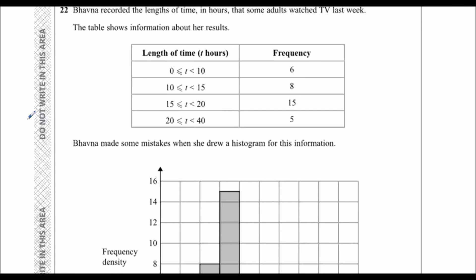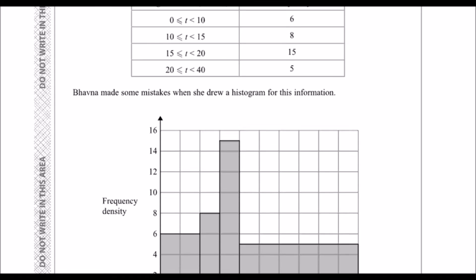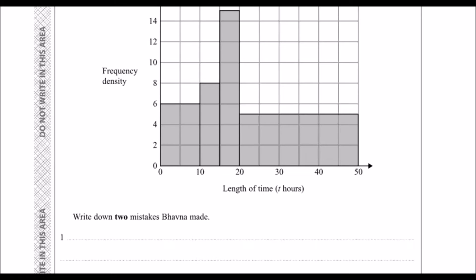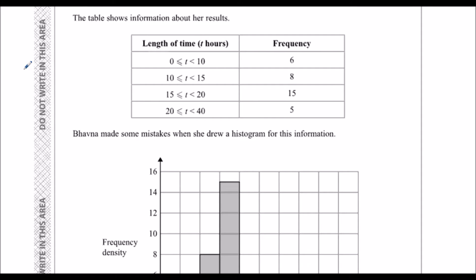Okay, so we've got a histogram question. We've got the lengths of time that adults took to watch TV in a table, and then someone's drawn a histogram and we need to write down the mistakes they've made.